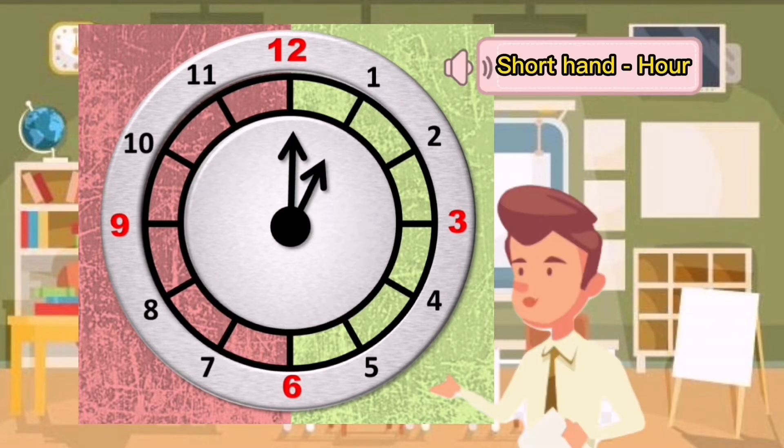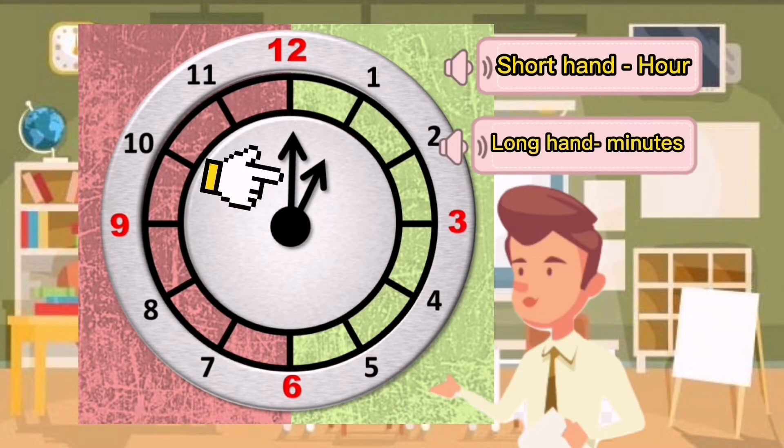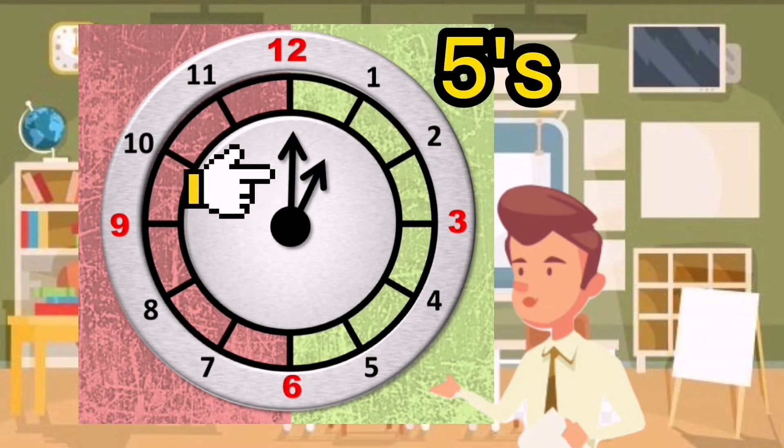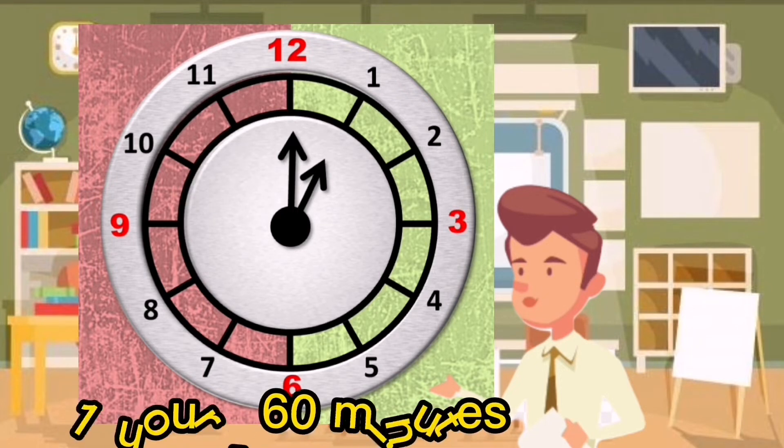When telling time we always look at the clock hands. Remember, the long hand tells us the minutes, so every number is counted by fives. There are five minutes between each of these numbers. In one hour there are 60 minutes.